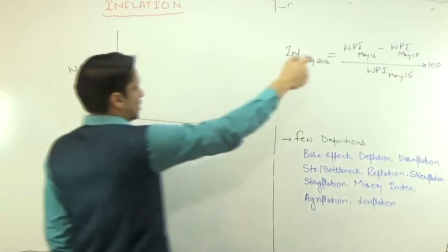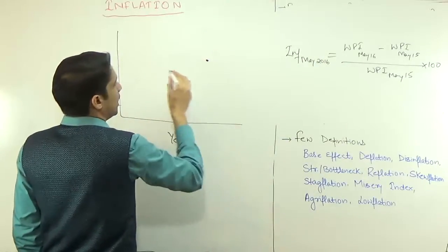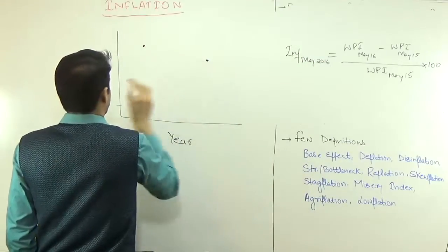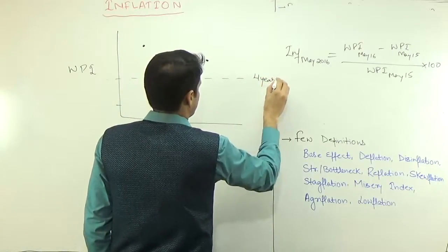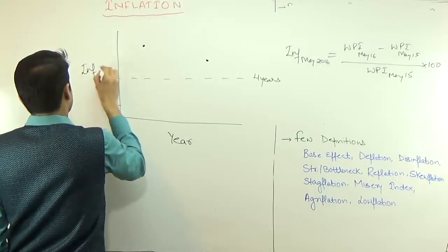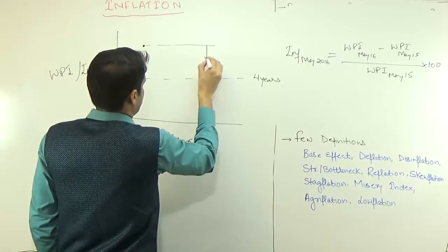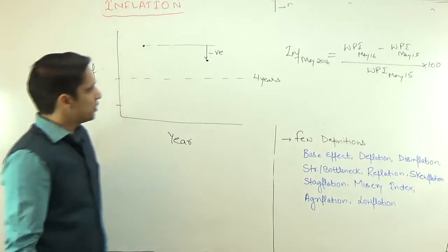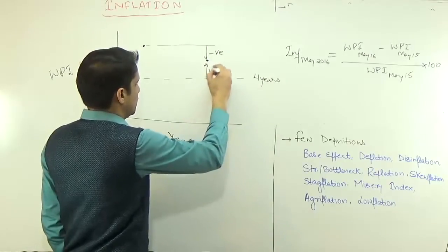Suppose the value of WPI in May 2016 is this value, and the value of WPI in May 2015 is this value. And this is the average rate of inflation over the last four years. With respect to this comparison, the inflation is negative — we can say inflation is negative in May 2016. But from the perspective of the average, it is very high.